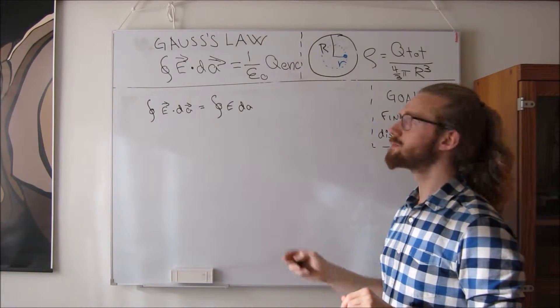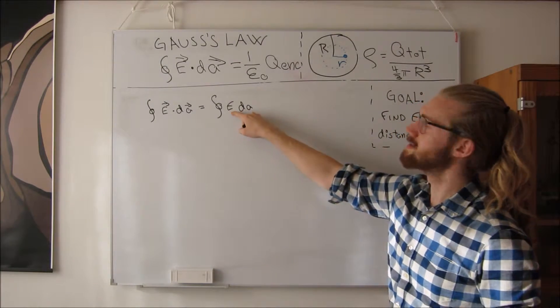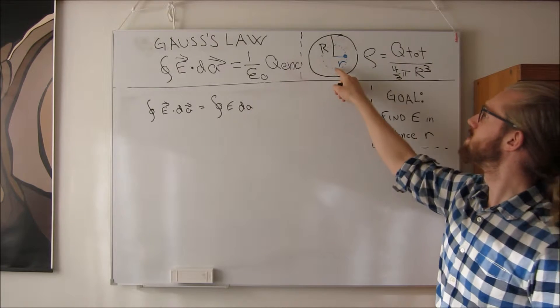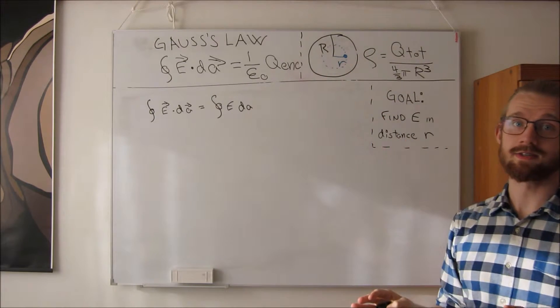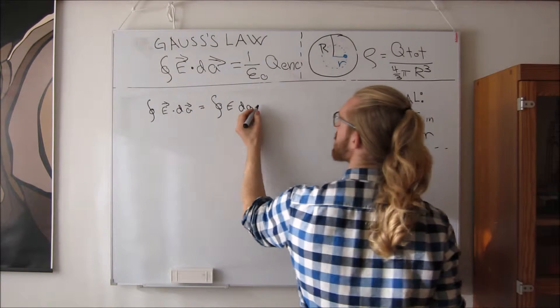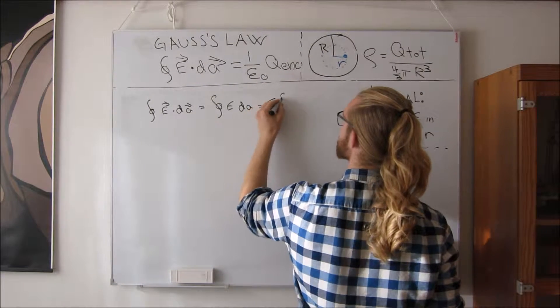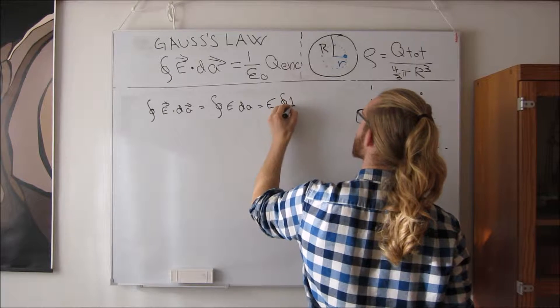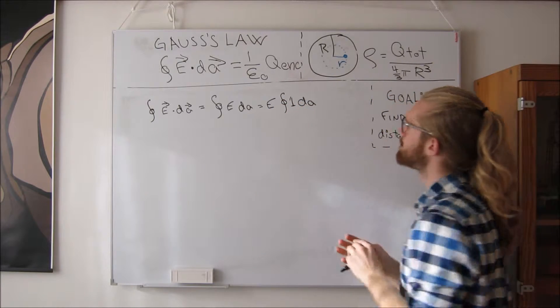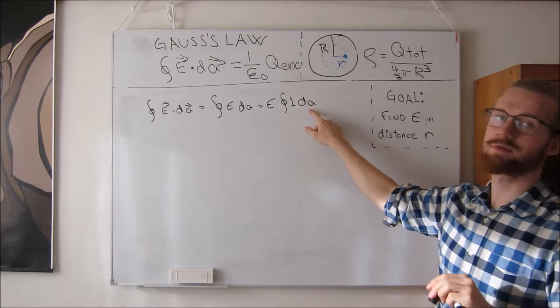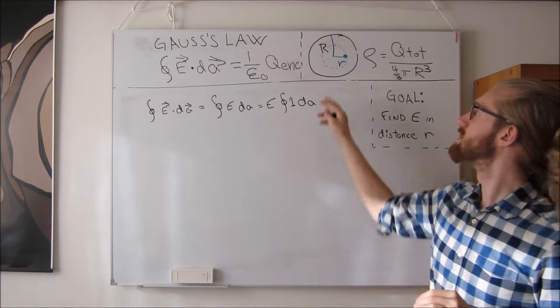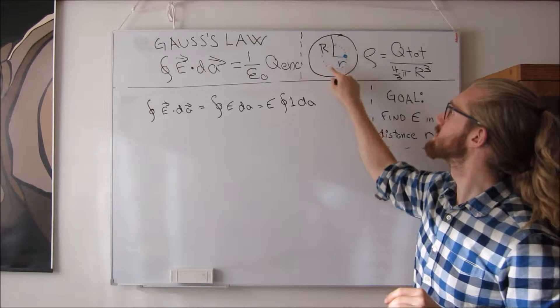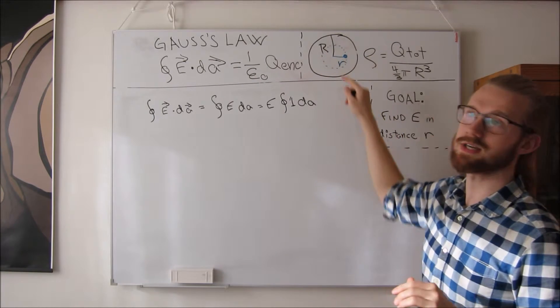So this surface integral, if we consider that E, the electric field strength on the entire surface of this blue shell is constant, then we can bring it outside the integral. And integrating 1 with respect to dA just gives us the area of what we are integrating over. So if we are integrating over this shell, this blue shell...